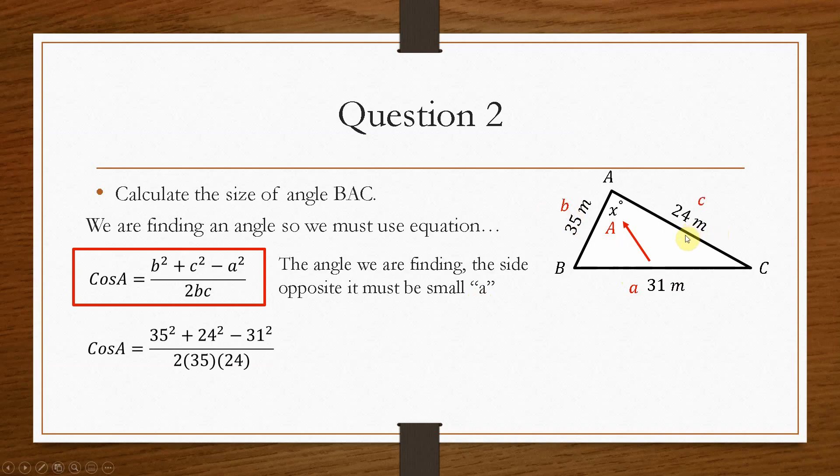So just like the last time, we'll pop all these values into the equation. We'll number crunch this, and we end up with cos A equals 0.5. So shift cos, when that goes over to the other side, so you would press shift, and then cos on the calculator will give you inverse cos, and then cos to the minus 1 of 0.5 will give us an angle of 60 degrees. And that is how you would go about solving the cosine rule using both of these equations, one for a length, and one for an angle.